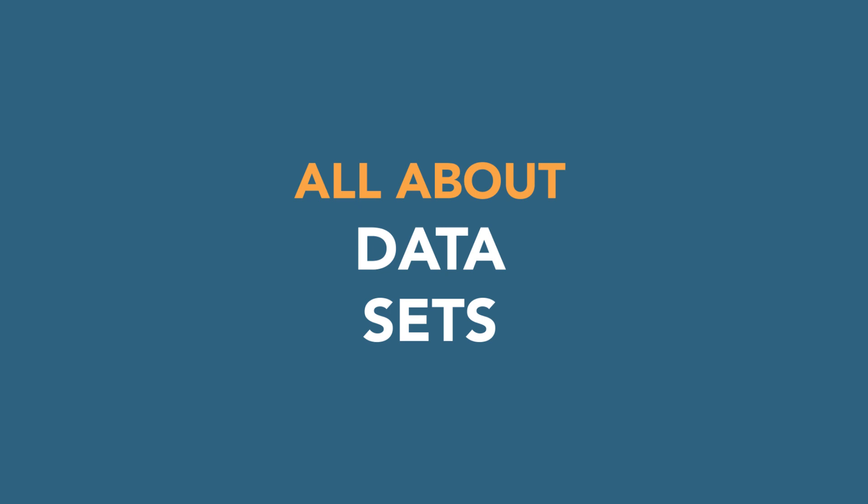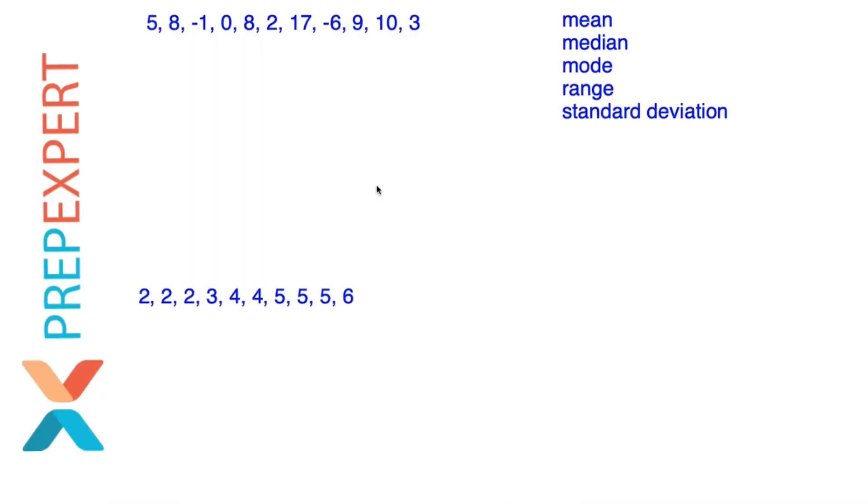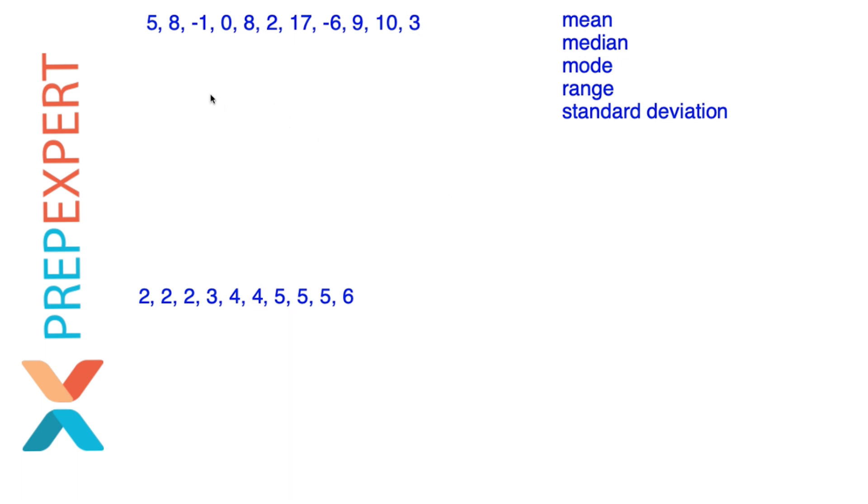When it comes to data sets on the SAT and ACT, the data set itself is just a set of values like you can see here. I've got two data sets drawn on screen. Each of those data sets is just a collection of values. The values may or may not have meaning in themselves. They might just be numbers. Either way, the data set is just the set of values.